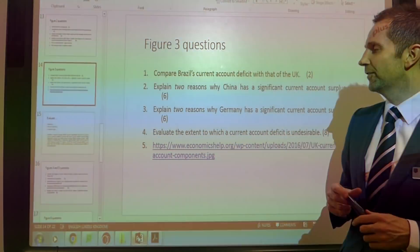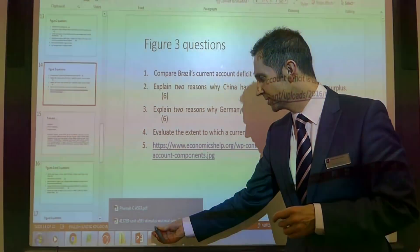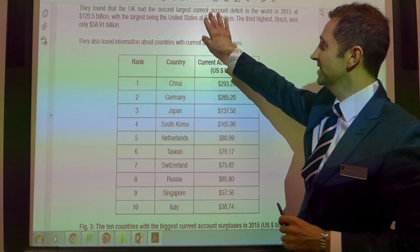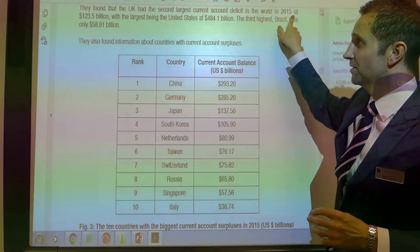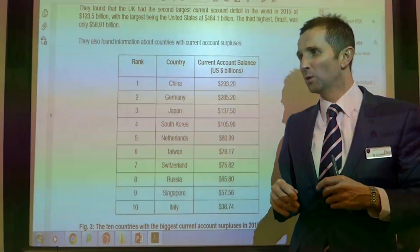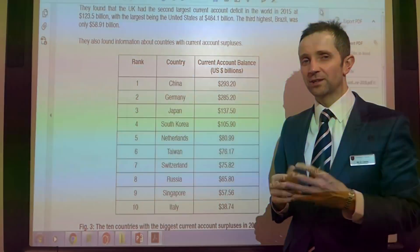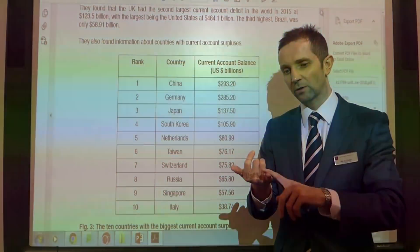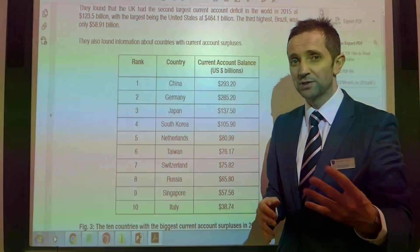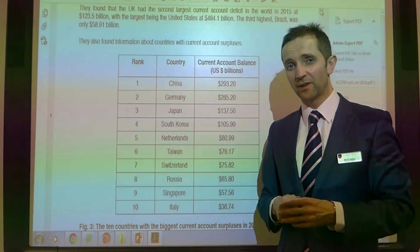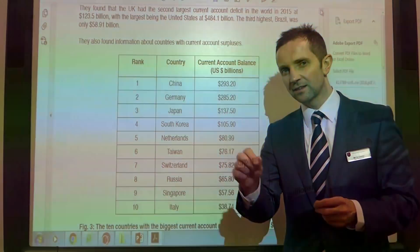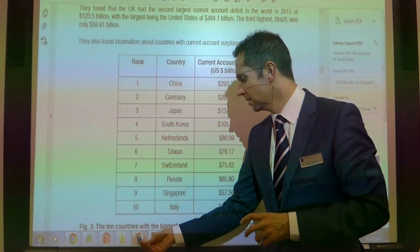So let's have a look at some questions for figure 3. First: compare Brazil's current account deficit with that of the UK. You can see the UK had the second largest current account deficit in the world in 2015 at 123.5 billion, and Brazil is third at 58.91 billion. For probably one mark, you would say the UK's is higher than Brazil's, then work out the difference between the two values and state the actual value in billions of pounds.